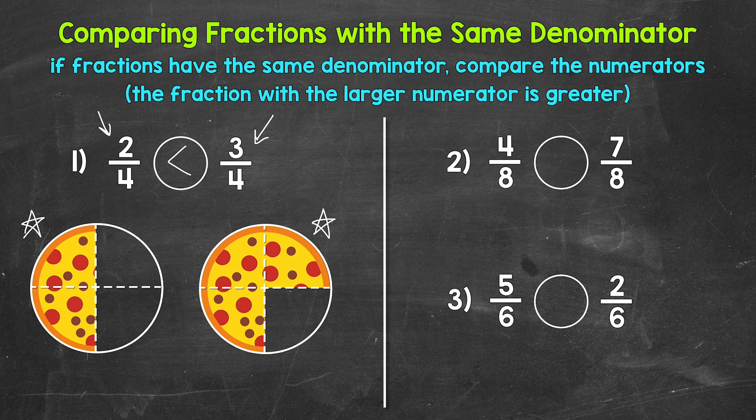Let's move on to number 2, where we have 4 eighths and 7 eighths. So reading this from left to right: 4 eighths is greater than, less than, or equal to 7 eighths. So let's think about this. If we have the same size total here divided into 8 equal pieces, which is greater? 4 out of the 8 total pieces, or 7 out of the 8 total pieces? Well, 7 out of the 8 total pieces — 7 eighths is greater.